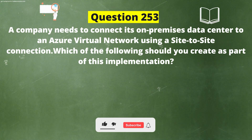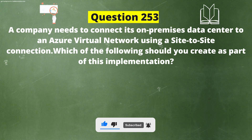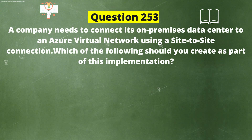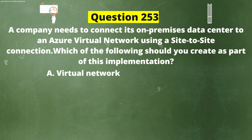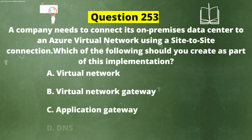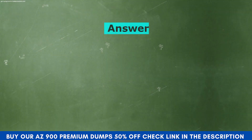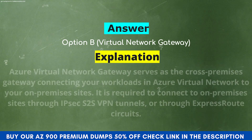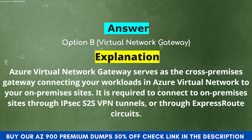Next question. A company needs to connect its on-premises data center to an Azure virtual network using a site-to-site connection. Which of the following should you create as part of this implementation? Option A: Virtual Network. Option B: Virtual Network Gateway. Option C: Application Gateway. Option D: DNS. The correct answer is Option B, Virtual Network Gateway. Explanation. Azure Virtual Network Gateway serves as the cross-premises gateway connecting your workloads in Azure virtual network to your on-premises sites. It is required to connect to on-premises sites through IPsec S2S VPN tunnels or through Express Route circuits.